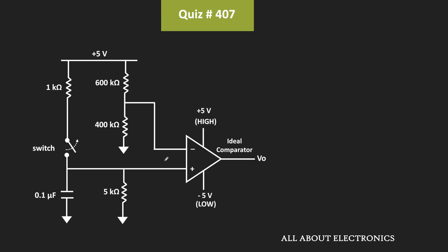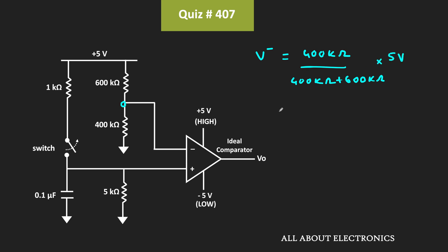At this inverting terminal, the voltage is applied through a voltage divider. Whatever voltage appears there will appear at this inverting terminal. The voltage at this inverting terminal V- is equal to 400kΩ divided by (400kΩ + 600kΩ) times 5V, which calculates to 2V.